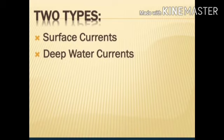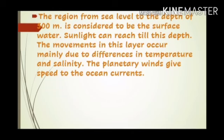Surface currents refer to the top part and deep currents refer to the bottommost part of the ocean. The region from sea level to a depth of 500 meters is considered surface water, because sunlight can still reach this depth. The movements in this layer occur mainly due to differences in temperature and salinity, and planetary winds also give speed to the ocean currents.